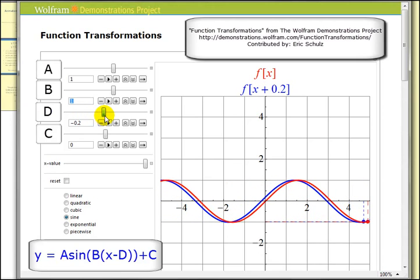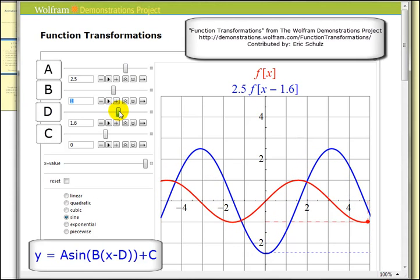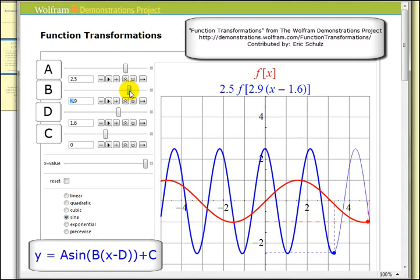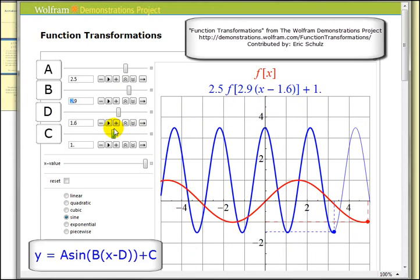So what happens if we change all these values at the same time? We can get some very interesting looking graphs that resemble the sine and cosine functions based upon the type of transformations that have occurred.